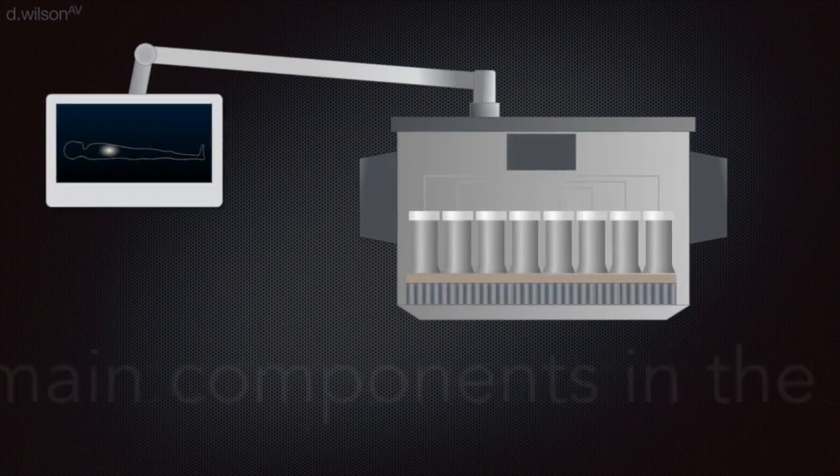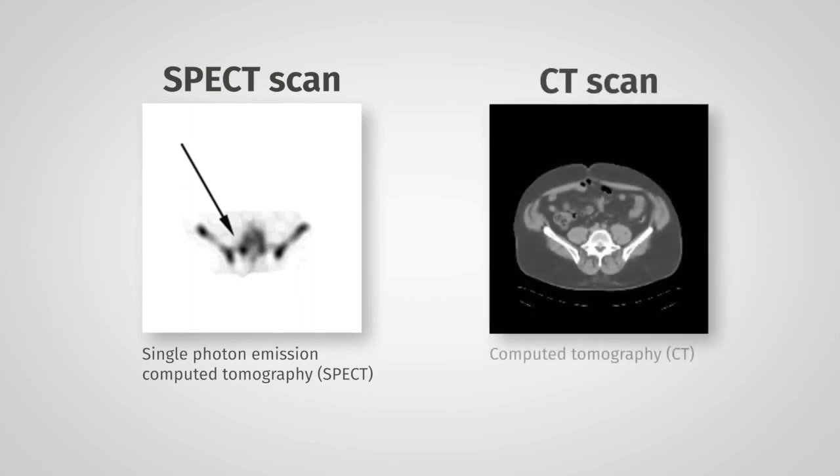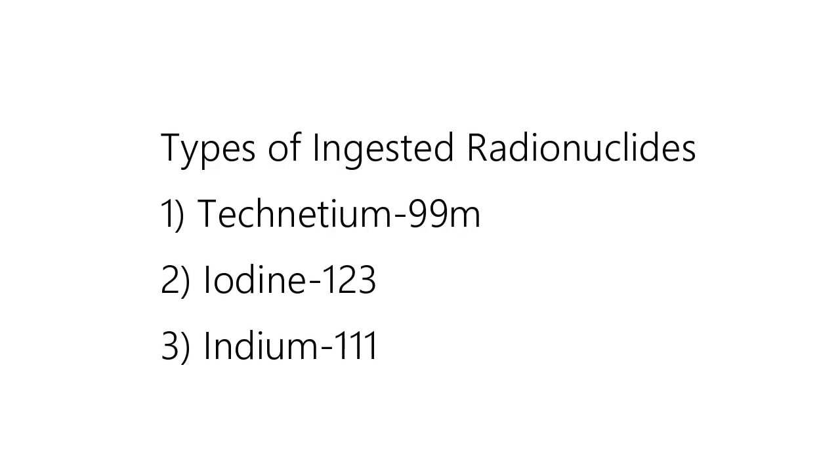A tomographic version of the gamma camera is called SPECT, which yields slices through the body. Because the detection techniques of gamma cameras and SPECT are based on the same concept, the same radioisotopes can be used for both techniques. Commonly used isotopes include technetium-99m, iodine-123, and indium-111.